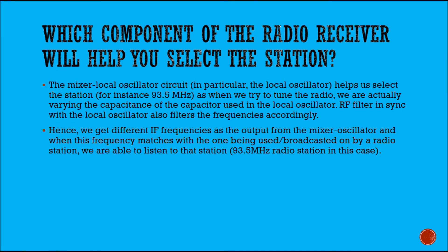Most of you would be wondering which component of the radio receiver helps you select a station. It is the mixer local oscillator circuit — in particular the local oscillator — which helps to select a station, for instance your favorite 93.5 MHz station. When we tune the radio, we are actually varying the capacitance of the capacitor used in the local oscillator. The RF filter in sync with the local oscillator also filters frequencies accordingly, so we get different IF frequencies as output from the mixer oscillator. When this frequency matches the one being broadcast by a radio station, we are able to listen to that station — 93.5 MHz in this case.